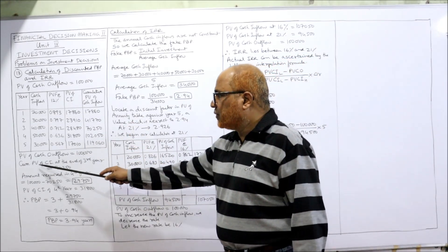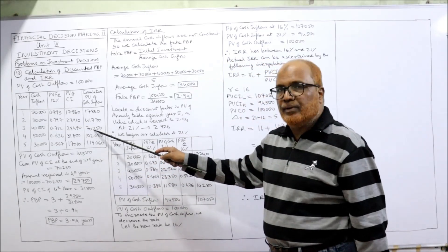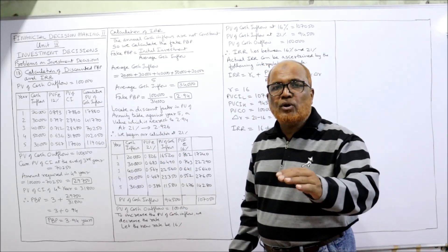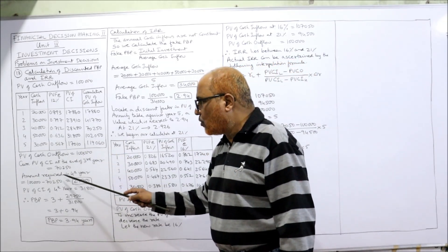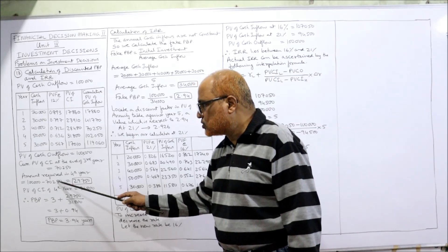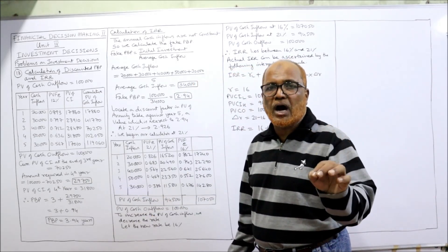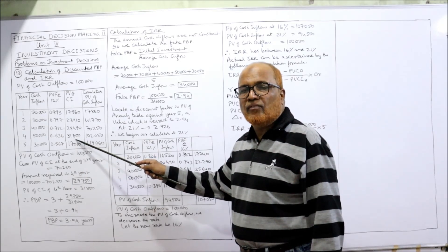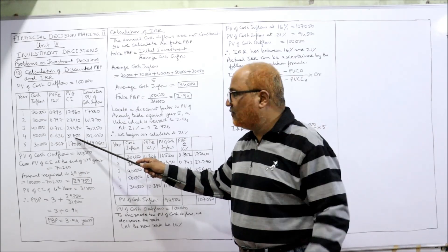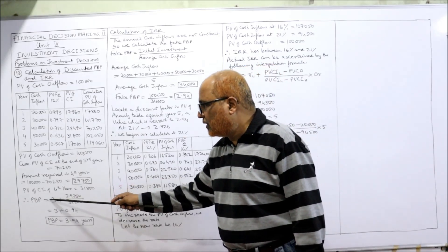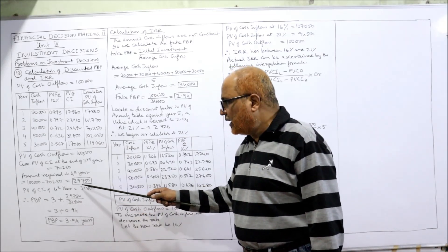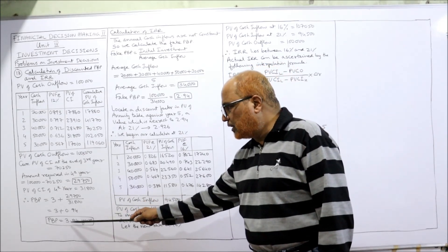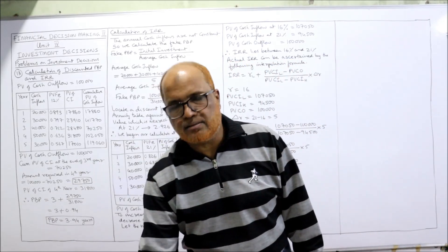Cumulative PV at end of year 3 is 70,250 — the business will recover 70,250 by then. Amount still to be recovered in year 4: 1,00,000 − 70,250 = 29,750. PV of cash inflow in year 4 is 31,800. So discounted PBP = 3 years + (29,750 / 31,800) = 3 + 0.94 = 3.94 years.